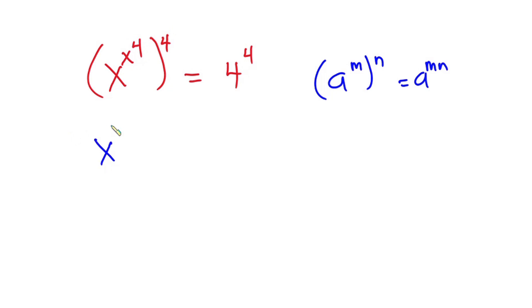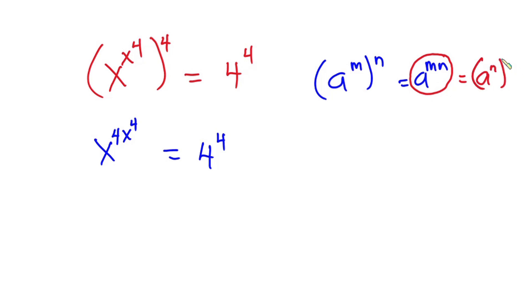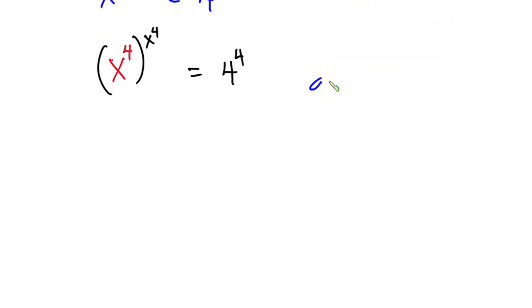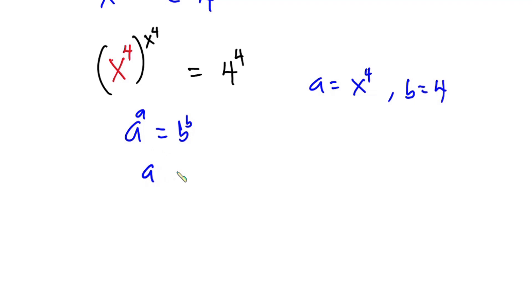So we have x to the power 4x to the power 4 is equal to 4 to the power 4. Now if I have a to the power mn, this is also the same as a to the power n to the power m. So I can rewrite this as x to the power 4 to the power x to the power 4. If I let a equals x to the power 4 and b equals 4, then we have a to the power a is equal to b to the power b, which means a equals b.